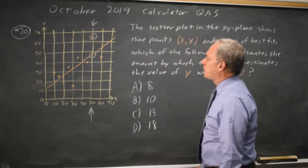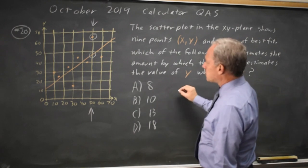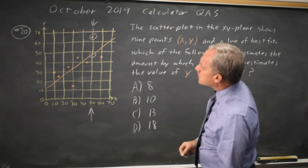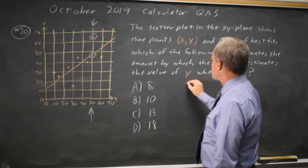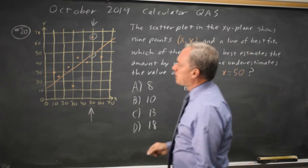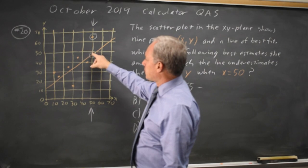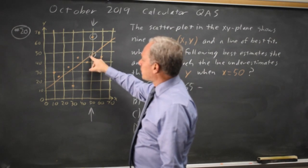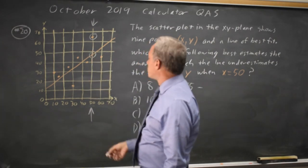So the actual value is between 60 and 70, about halfway between, so I'm going to call that 65. And the line is between 40 and 50. 45 would be midway, maybe 47.